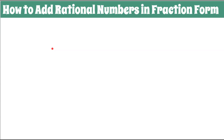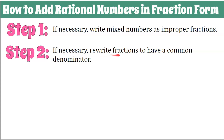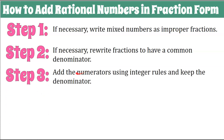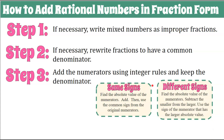Here are our steps for adding rational numbers in fraction form. Step one: if necessary, write mixed numbers as improper fractions. Step two: if necessary, rewrite fractions to have a common denominator. Step three: add the numerators using integer rules and keep the denominator. We have two integer rules — same signs and different signs. If the numerators have the same signs, use the same signs rule; if different signs, use the different signs rule.